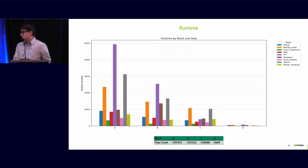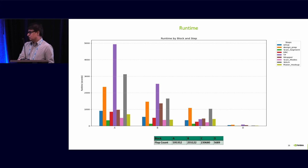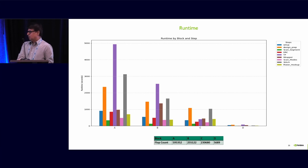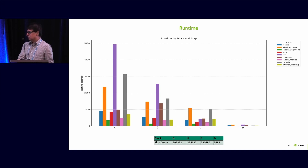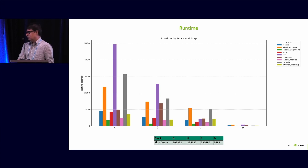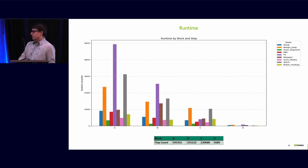This is the runtime result of the different scan insertion steps, starting from setup going all the way to power insertion. Most of the time is taken by TP analysis, and in those blocks, using multi-threading we can reduce the TP analysis runtime by 30 to 40%. Block A, which has approximately 600k flops, completes insertion in less than 3 hours. Block B, which is about half the size of block A, completes in 1 to 2 hours.